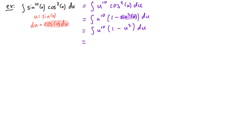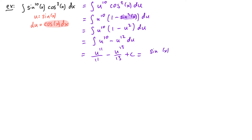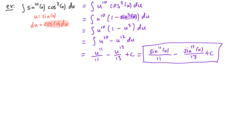To integrate this I just need to distribute. I get the integral of u to the tenth power minus u to the twelfth power. Using the power rule we can compute the antiderivative to be u to the eleventh over eleven minus u to the thirteenth over thirteen plus c. Finally our last step is to rewrite this back in terms of x, so this becomes sine of x to the eleventh power divided by eleven minus sine of x to the thirteenth power divided by thirteen plus c. And that's our final answer.